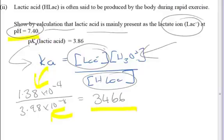We get a number of 3,466, which in effect is telling us that it's much greater than 1, which means there's a lot more of lactate ions present. So it's significant, that's a huge amount more, thousands of times more.